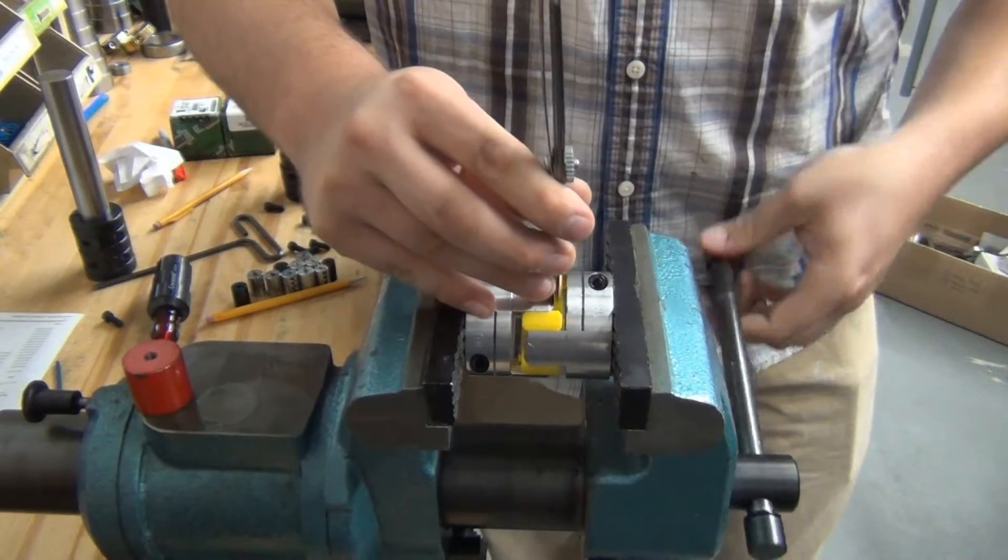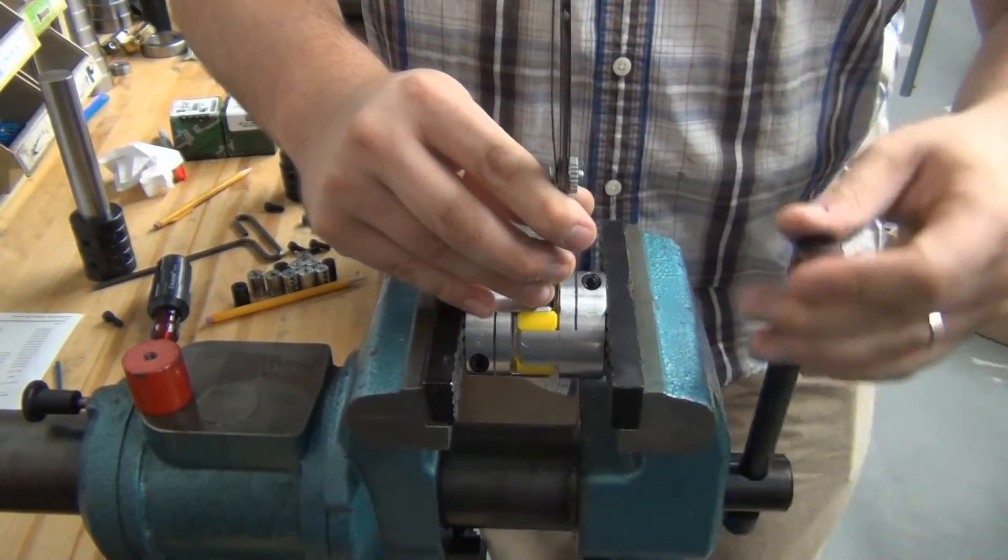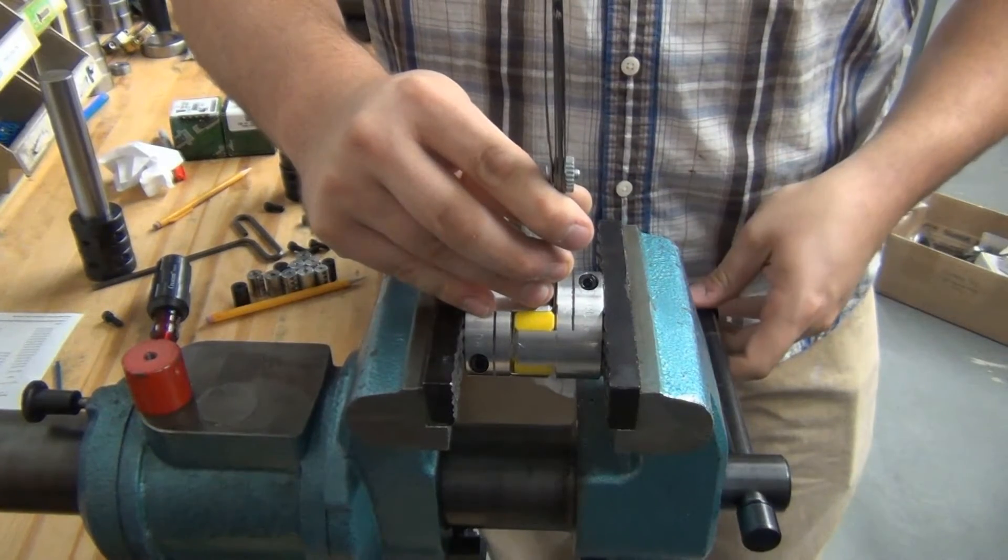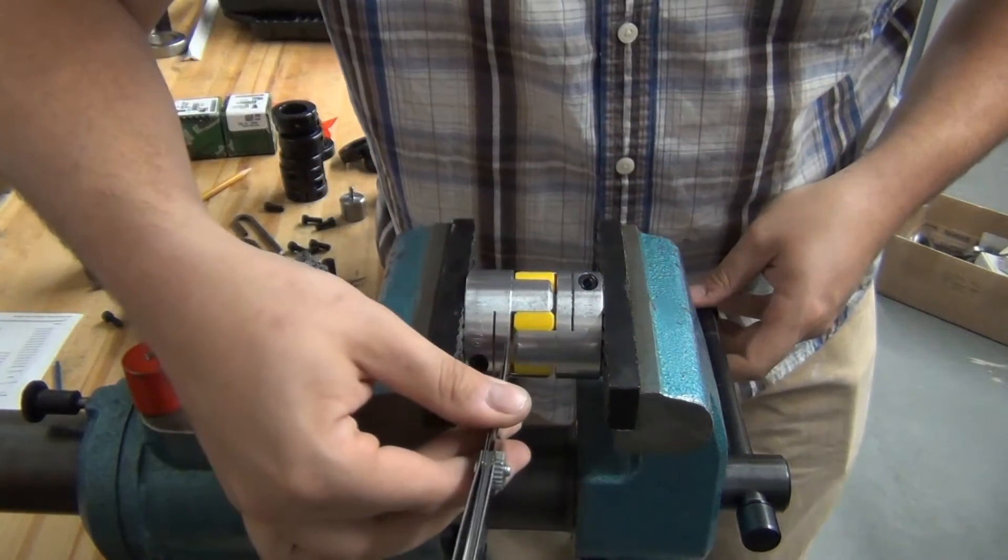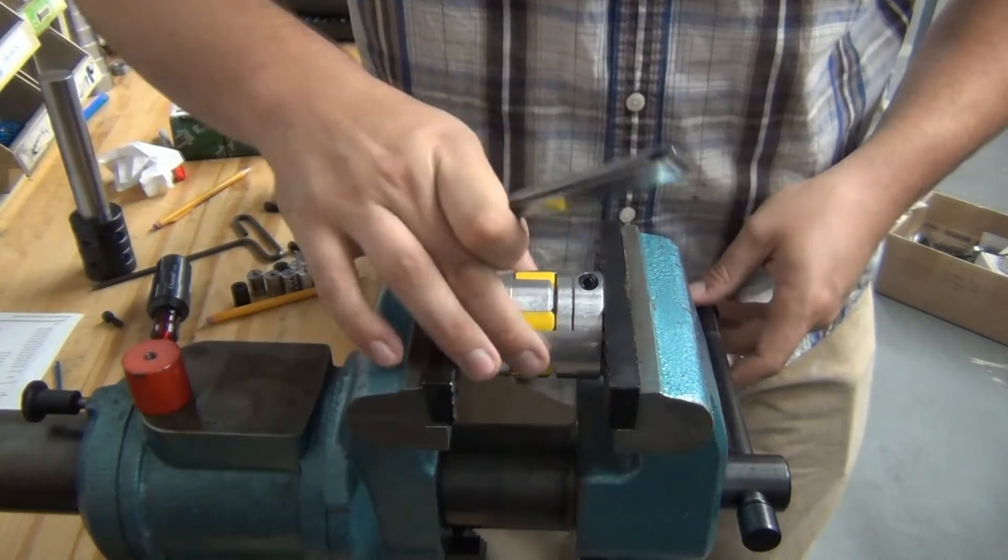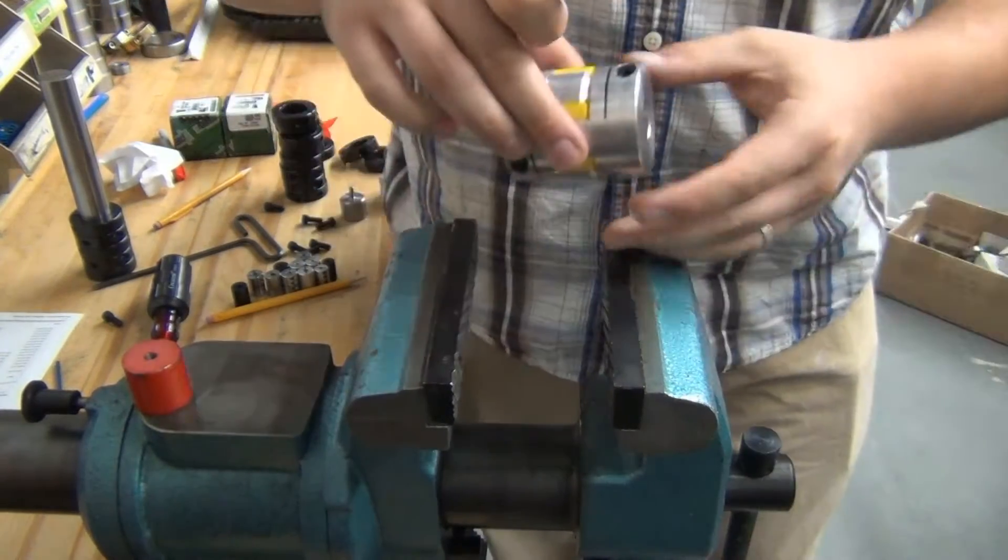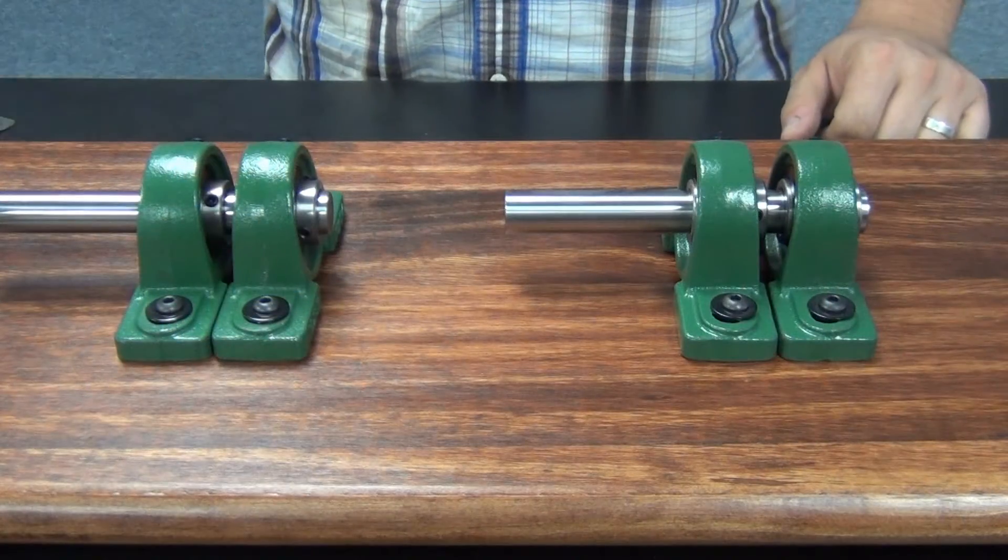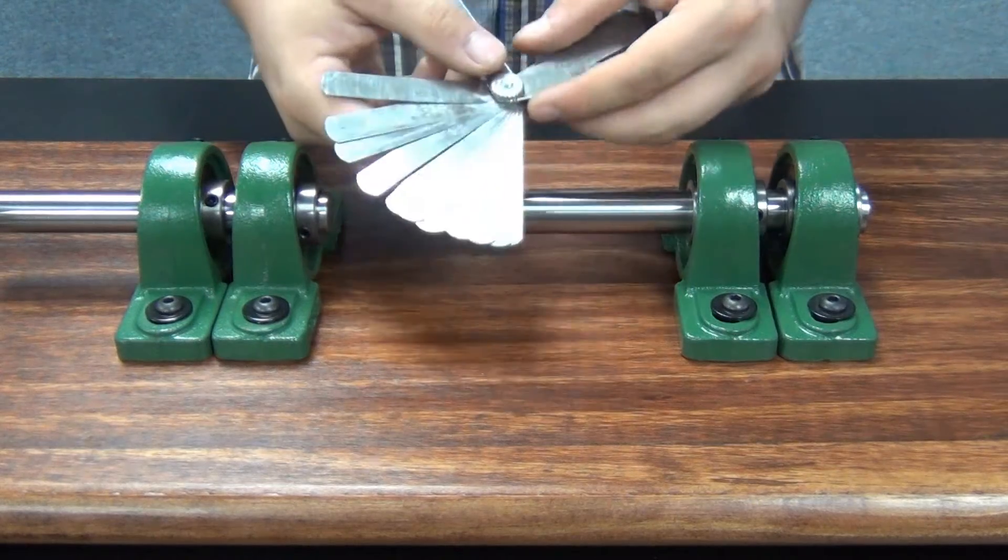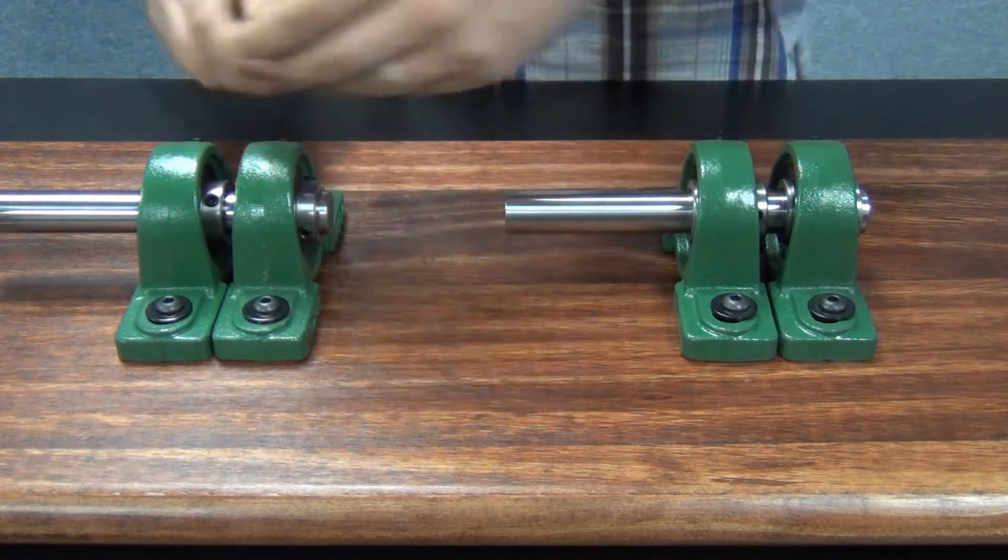Use the feeler gauge to maintain the gap between the hubs to prevent metal to metal contact. Before we install the coupling on the shaft, we are going to make sure the gap has been maintained to ensure maximum performance.